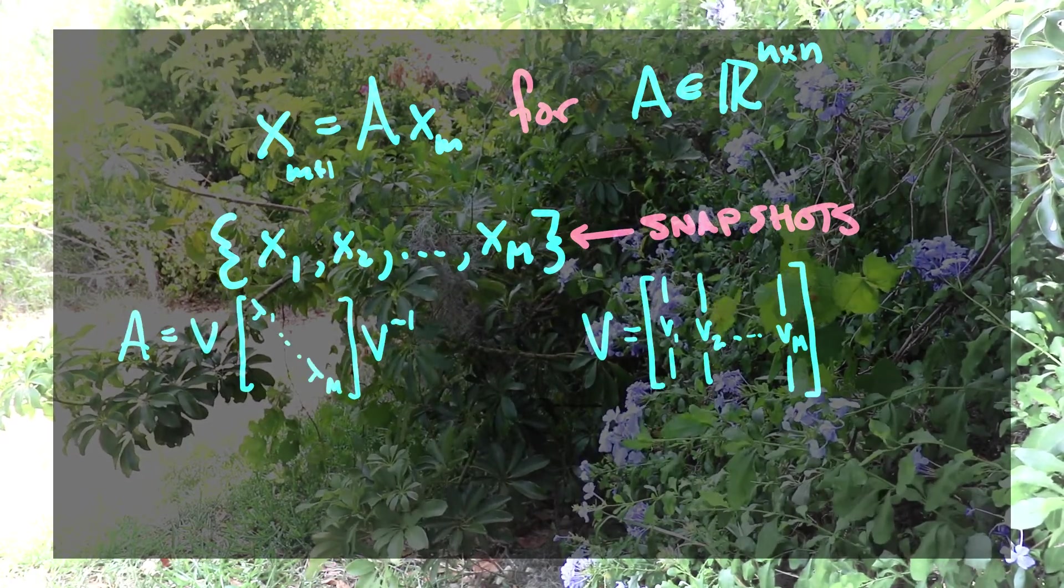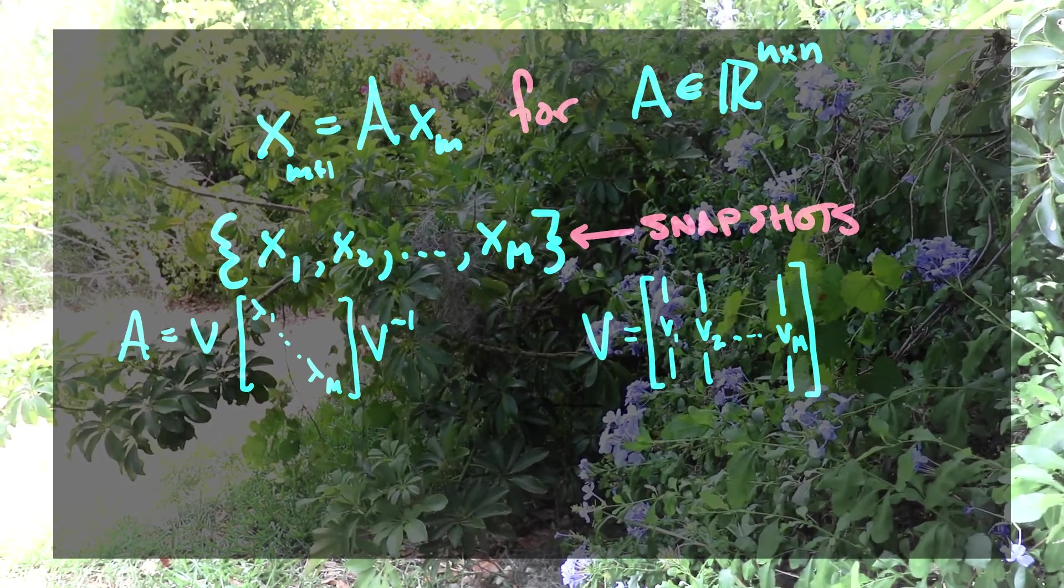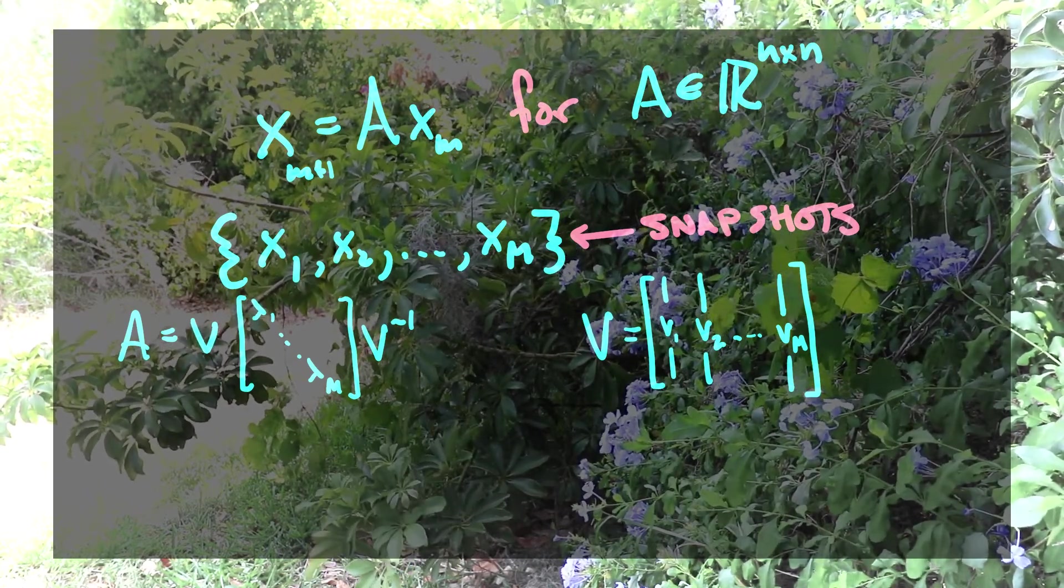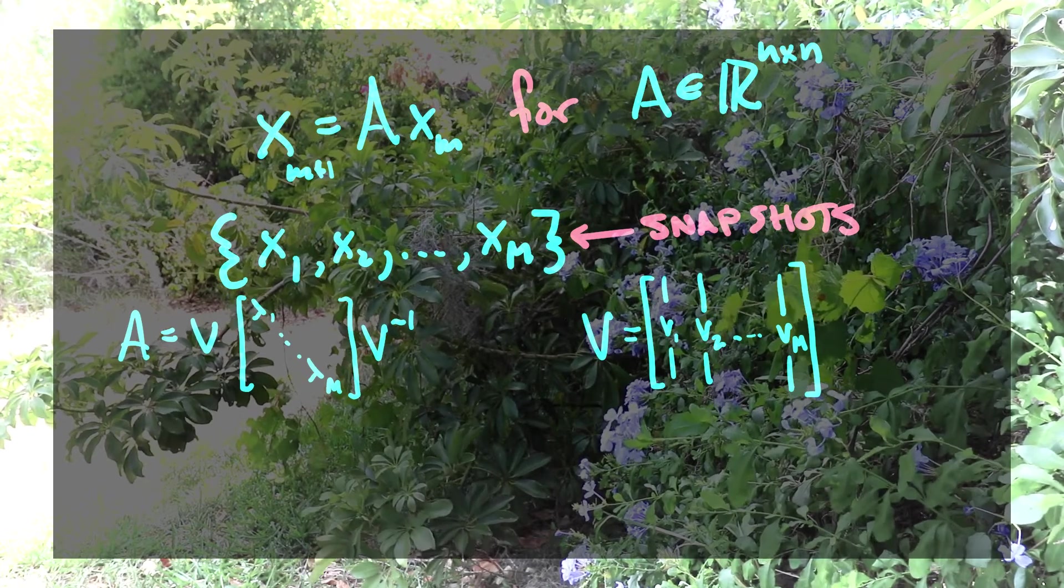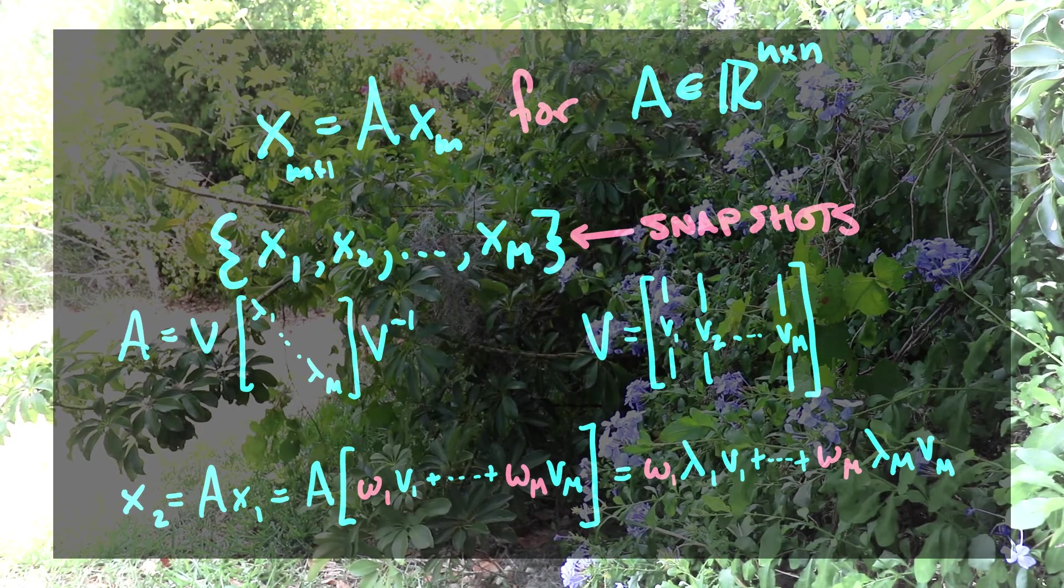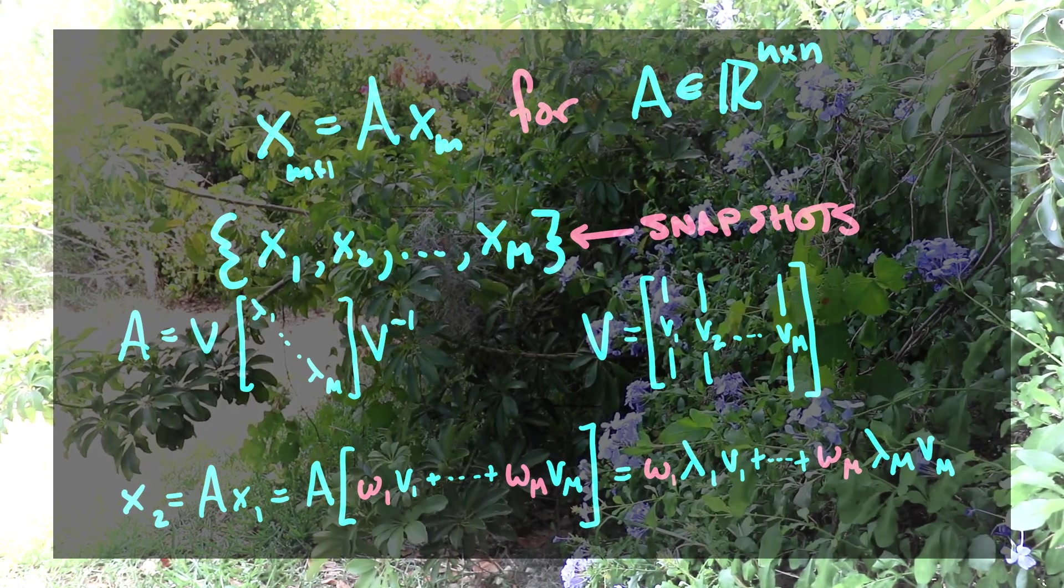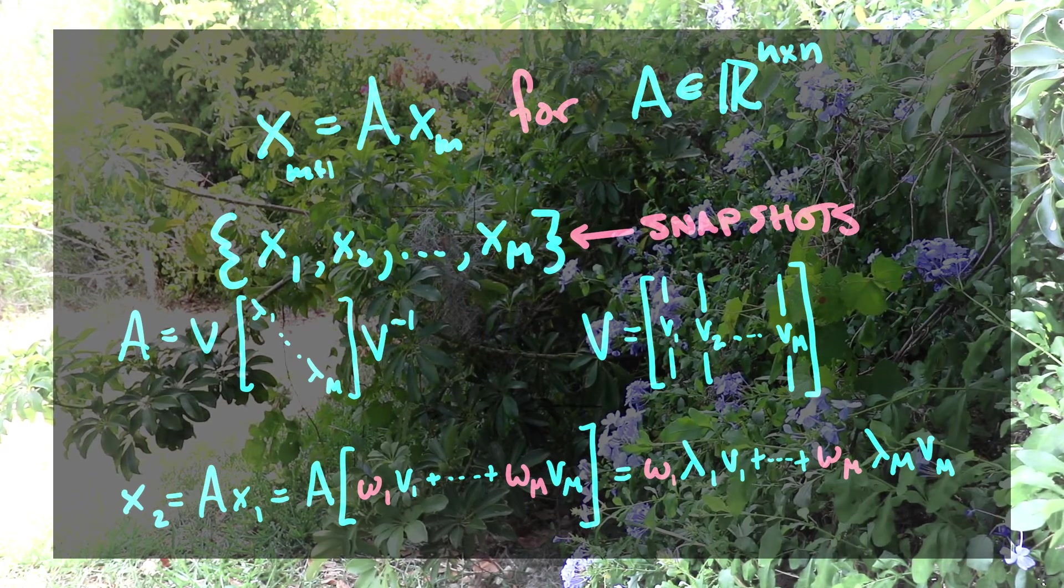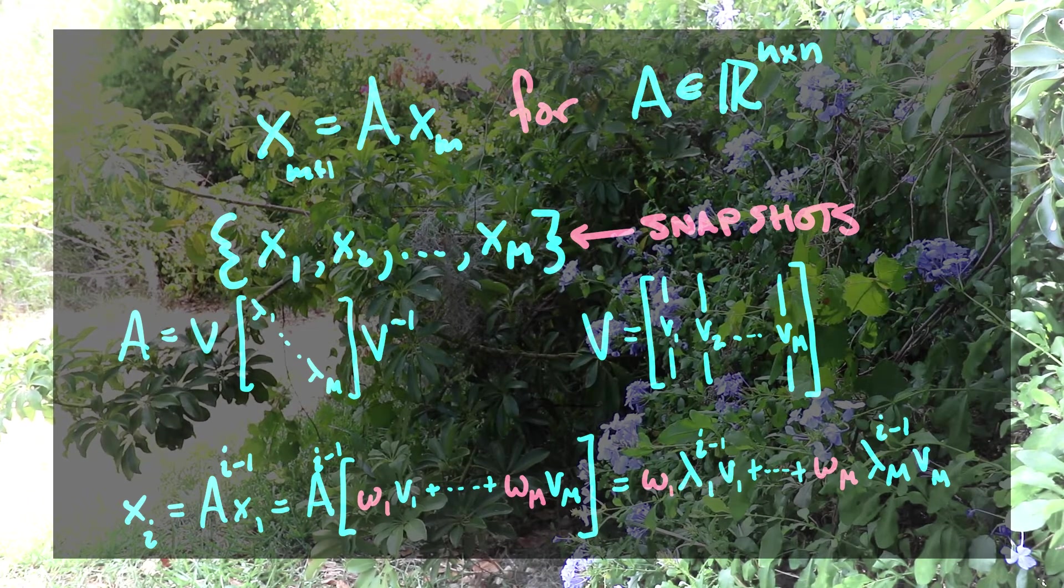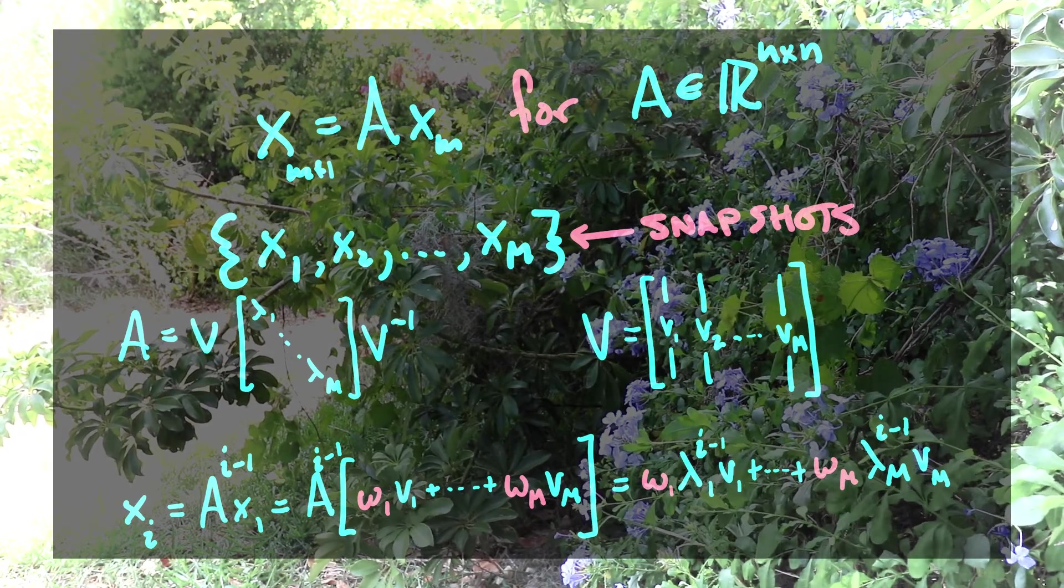Then what we can see is that if we take an eigendecomposition of our matrix, then we can represent each of our snapshots of our time series as a collection of eigenvectors and eigenvalues. Ultimately every linear system can be represented through a sum of exponentials. And we'd like to do this for nonlinear systems too.